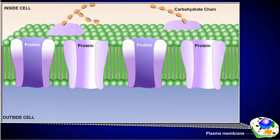Short chains of sugars are attached to the outer surface of some of these proteins, forming glycoproteins, which serve as recognition signals to other cells.